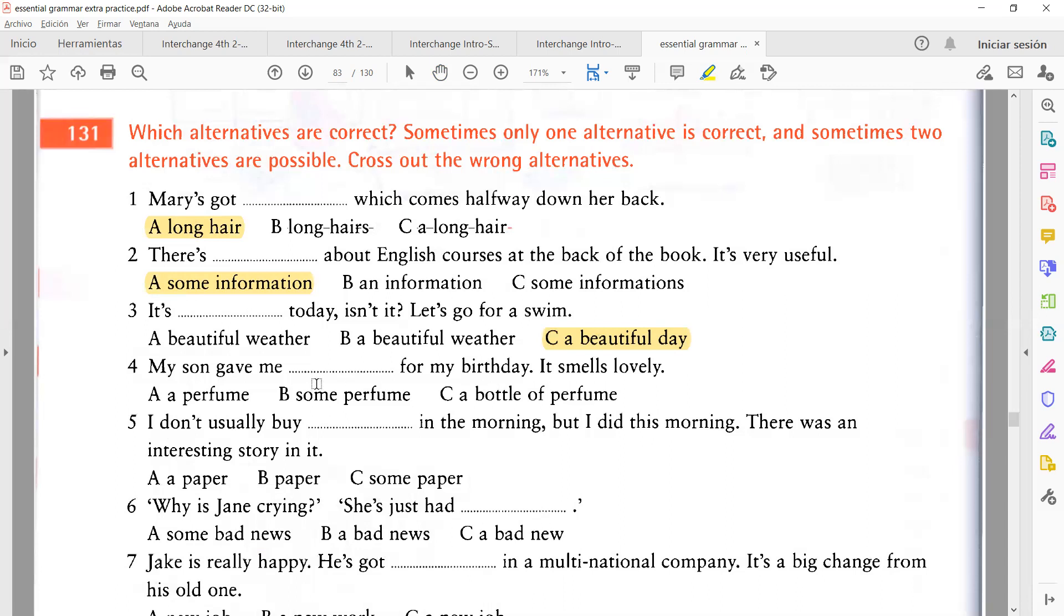A beautiful day, a beautiful day. Si no hay de otra. It's a beautiful day today isn't it, let's go for a swim. My son gave me blank for my birthday, it smells lovely. Mi hijo me dio por mi cumpleaños, huele encantador. A bottle of perfume. Perfume, perfume. Por qué no a perfume? Porque es líquido, no se cuenta.